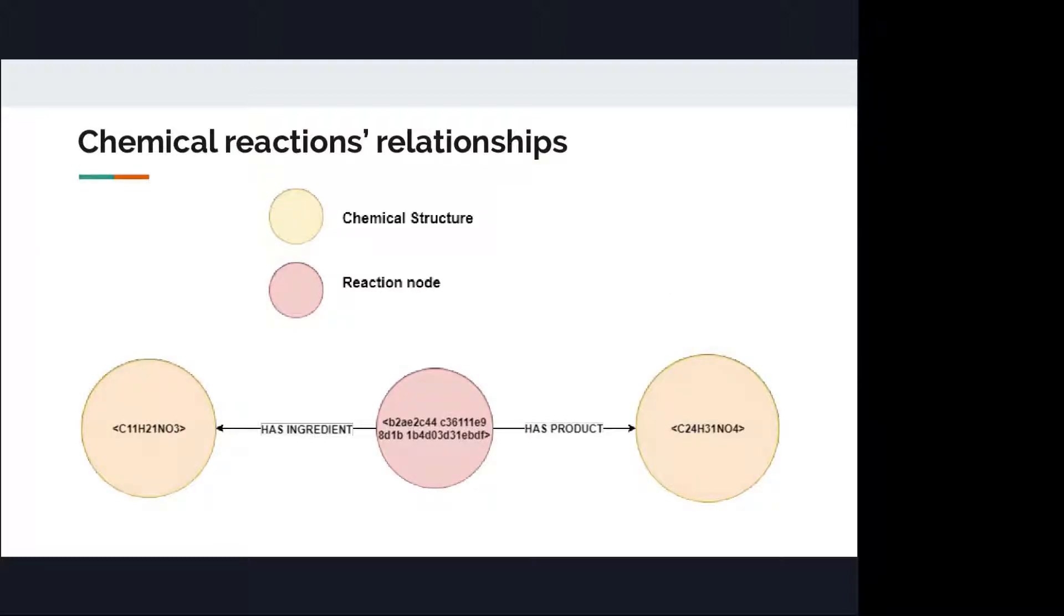Before moving further to applications, I have to define chemical reactions relationships. In this case, we have two types of nodes: Reaction node and the chemical structure. Reactions do contain ingredients and, of course, products.